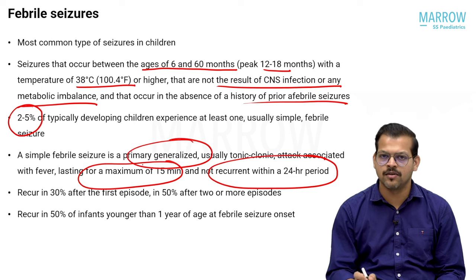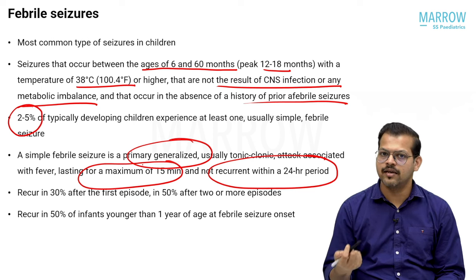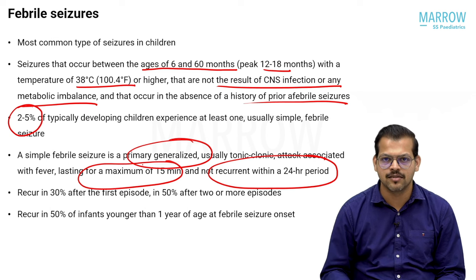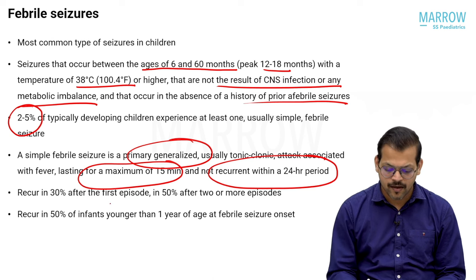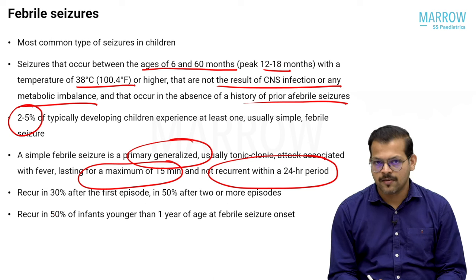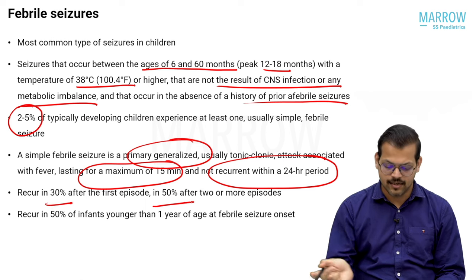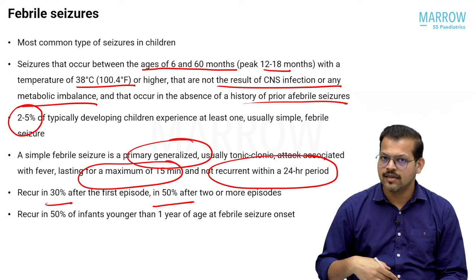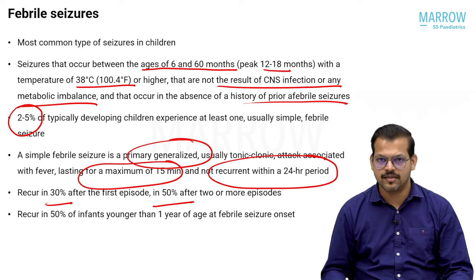The presence of a focal seizure with fever makes it unlikely to be a simple febrile seizure; most of the time it may develop into other types of epilepsy. After the first episode of febrile seizure, recurrence occurs in 30 percent of cases. After two episodes, recurrence occurs in 50 percent. In children younger than one year, the recurrence risk is 50 percent after the first febrile seizure.